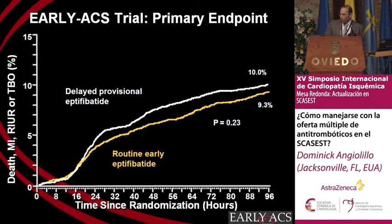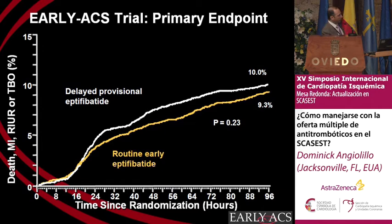The next question is: what about upstream 2B3A inhibitors? We've been doing it for many years in clinical practice, but it was not until just a few years ago that we had a dedicated randomized trial to address this question. The results from the EARLY ACS trial clearly show that the answer is no. This is the reason why both the European and American guidelines provide a Class 3 recommendation against routine use of upstream 2B3A inhibitors.